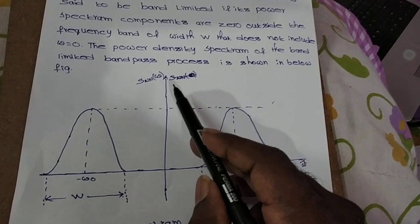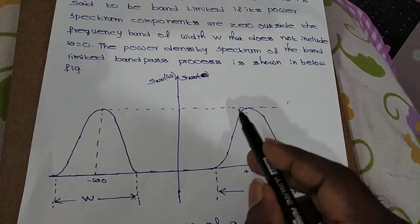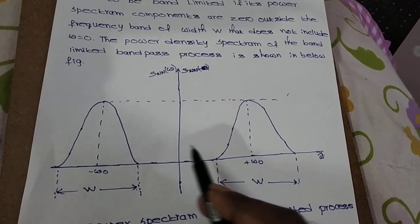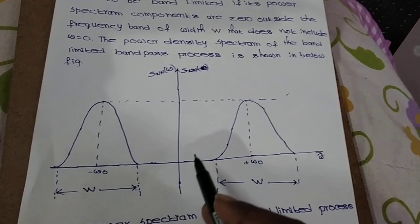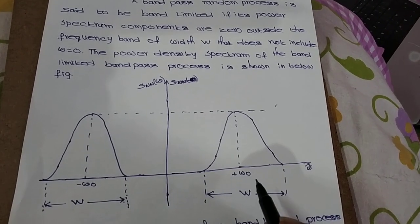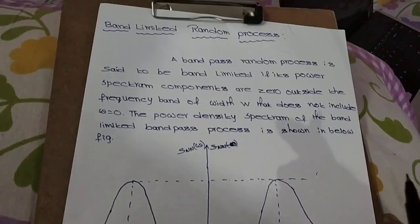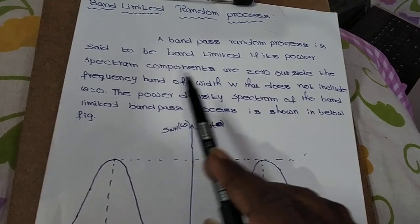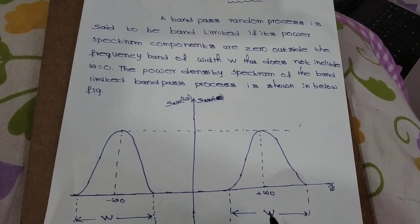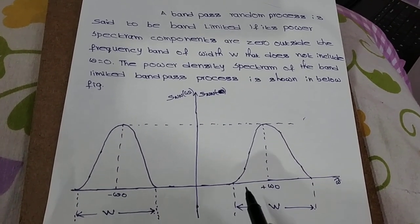In the figure, omega is the frequency in the x-axis, and S double N of omega is the power spectrum in the y-axis. Power spectral components present outside the bandwidth W are completely zero. Power spectral components are present within bandwidth W. A band pass process is said to be band limited if its power spectral components are zero outside the band of width W, not including omega equal to zero.